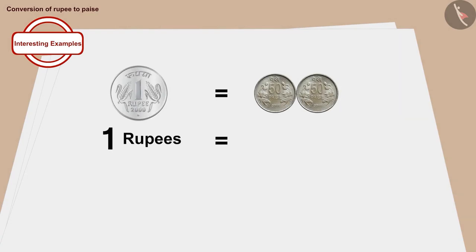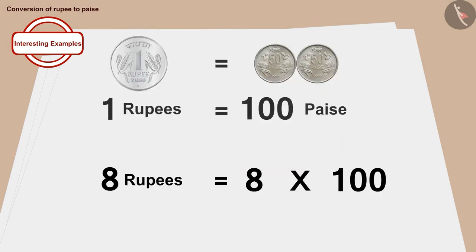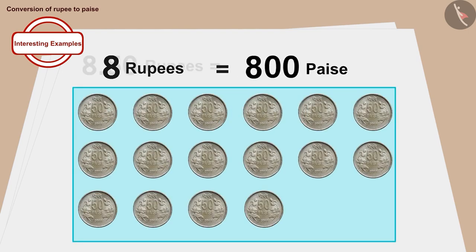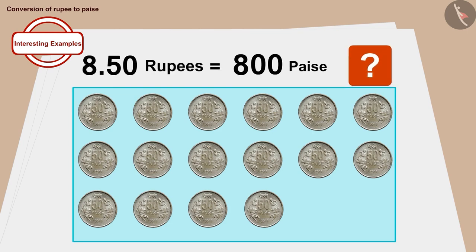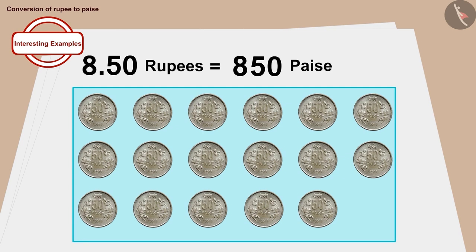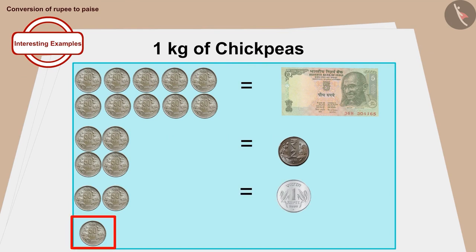1 rupee is equal to 100 paise. So, 8 rupees is equal to 8 times 100, or 800 paise. Now, what do we have to do to find out how much paise was to be given? Yes, we have to add 50 paise to 800 paise. In this way, the price of 1 kg of chickpeas is 850 paise.